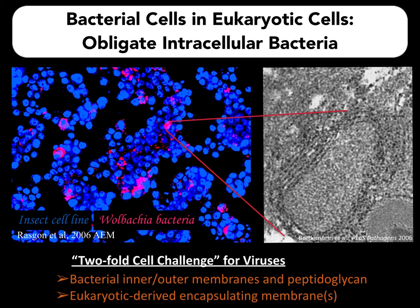In pink is the Wolbachia bacteria that live in the cytoplasm of these cells — they're obligate intracellular bacteria. If you zoom in and do a transmission electron micrograph, you'll see the Wolbachia cell, about one micron in length with multiple membranes: its own inner and outer membrane, plus eukaryotic-derived membranes. Sometimes we'll see Wolbachia cells with one outer membrane, one inner membrane, and one eukaryotic membrane. Other times we'll see multiple eukaryotic membranes. So if you're a virus living in this niche, you essentially have what we're thinking of as a two-fold cell challenge.